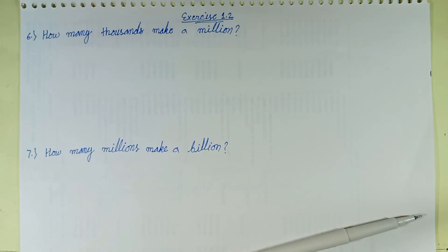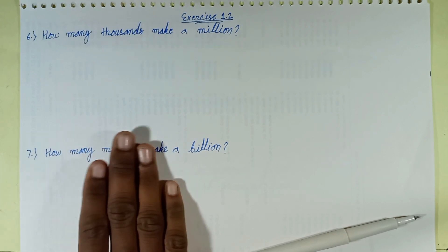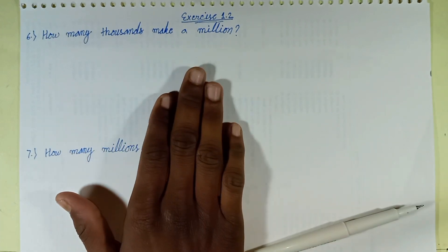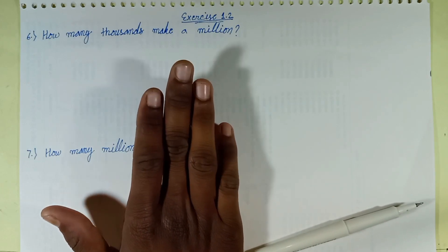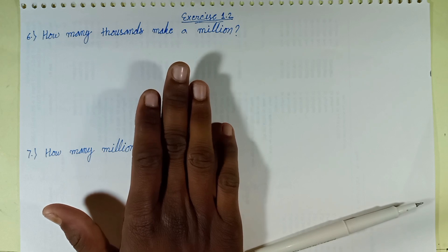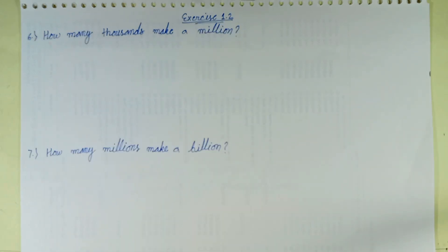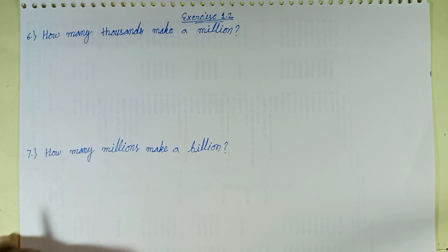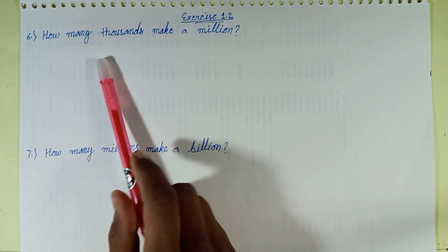Welcome back to this episode. This episode discusses question number six and seven. These questions belong to exercise 1.2 from R.D. Sharma Mathematics for Class 6. Let's solve question number six first: how many thousands make a million?